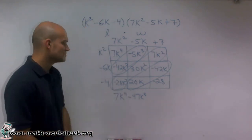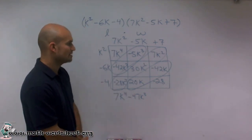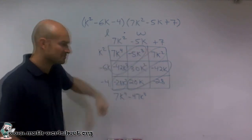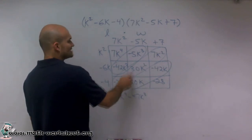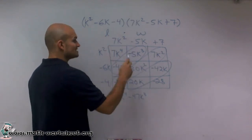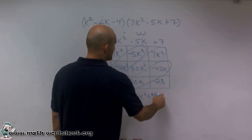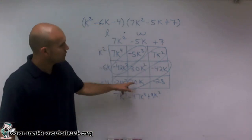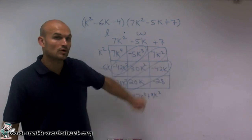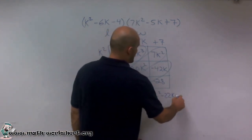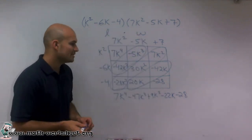Negative 28k squared plus 30k squared plus 7k squared. Now why am I saying plus? Because they're positive. So there would be a plus. So therefore, that gives me negative 28k squared plus 30k squared is 2k squared, plus another 7k squared is going to be a positive 9k squared. 20k minus 42k is a negative 22k and then minus 28. And there you go, ladies and gentlemen.